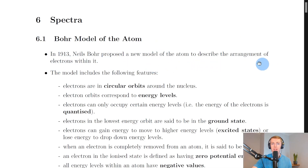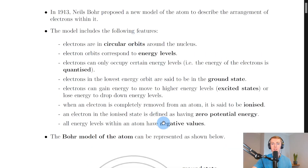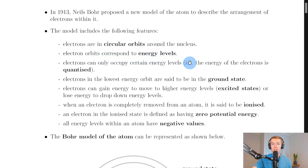In 1913, Niels Bohr proposed a new model of the atom to describe the arrangement of electrons within it. The model includes the following features — here's a big list useful to know for the exam. Firstly, electrons are in circular orbits around the nucleus. Electron orbits correspond to energy levels, and electrons can only occupy certain energy levels — i.e., the energy of the electrons is quantized.